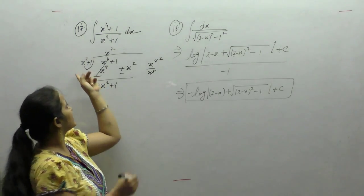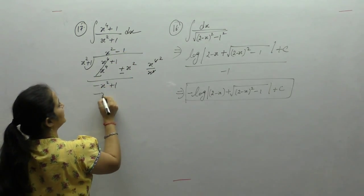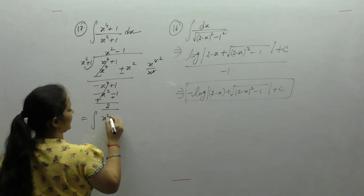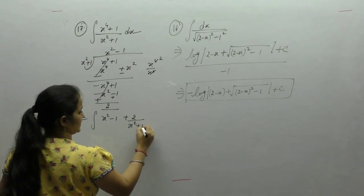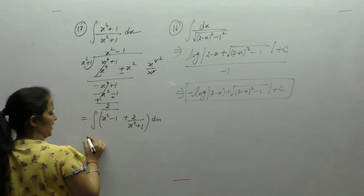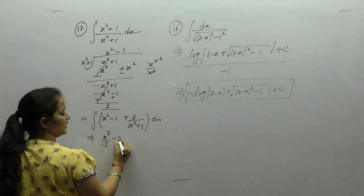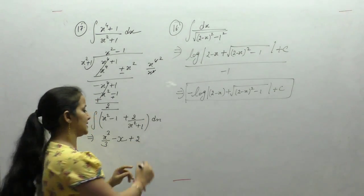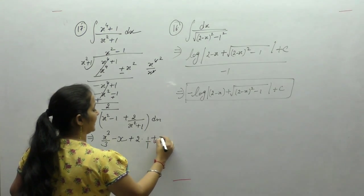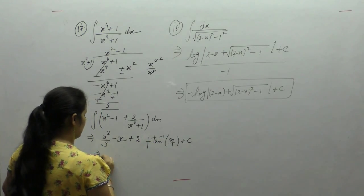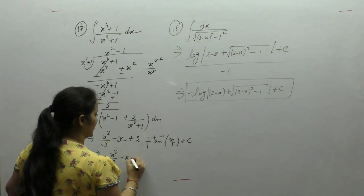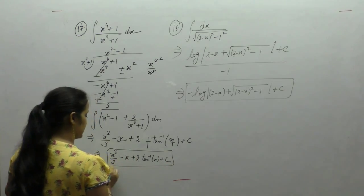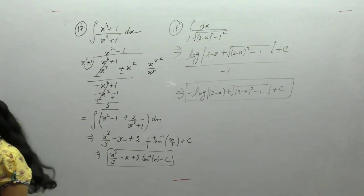Divide minus x square by x square, we get minus 1. Minus 1 into 1 is minus 1; remainder is 2. So we integrate x square minus 1 plus 2 upon (x square plus 1). Applying the power rule (x power n plus 1 upon n plus 1), integral of 1 is x, and 2 is constant. Using the formula integral of 1 upon (x square plus a square) is 1 upon a tan inverse (x upon a) plus c. Final answer: x cube upon 3 minus x plus 2 tan inverse x plus c.